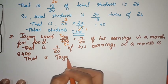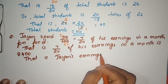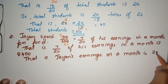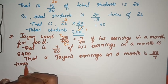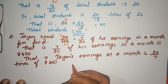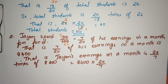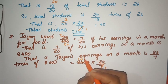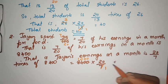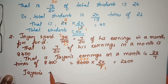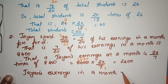Jane's earnings in a month equals 20 by 7 times of 8,400. That is 8,400 into 20 by 7. We cancel: 7 into 1 and 7 into 2 is 14. Jane's earnings in a month is 24,000 rupees.